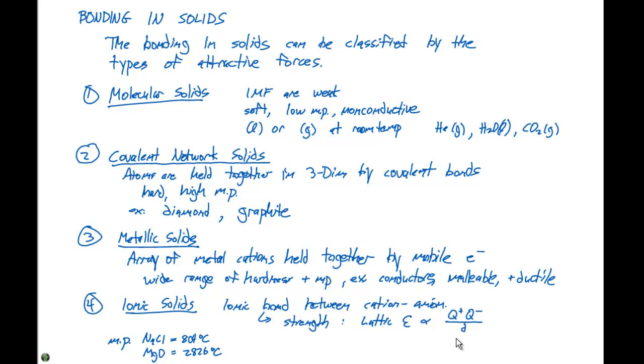Here, when we go from NaCl, we have a plus one and a minus one charge, where magnesium oxide has a plus two and minus two charge. So we see a drastic increase here in the melting point.